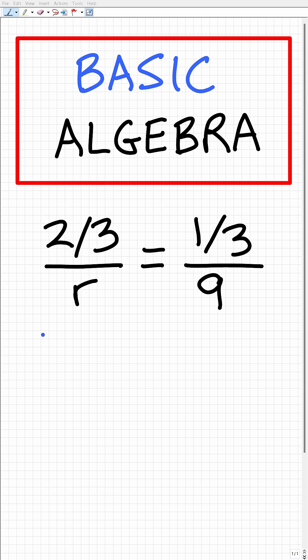Let's see if we can solve this basic algebra equation. So we have two-thirds over r is equal to one-third over nine.